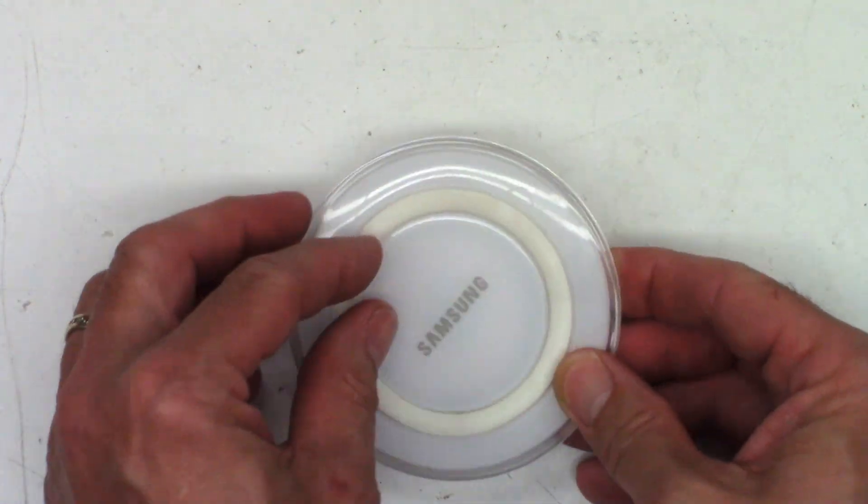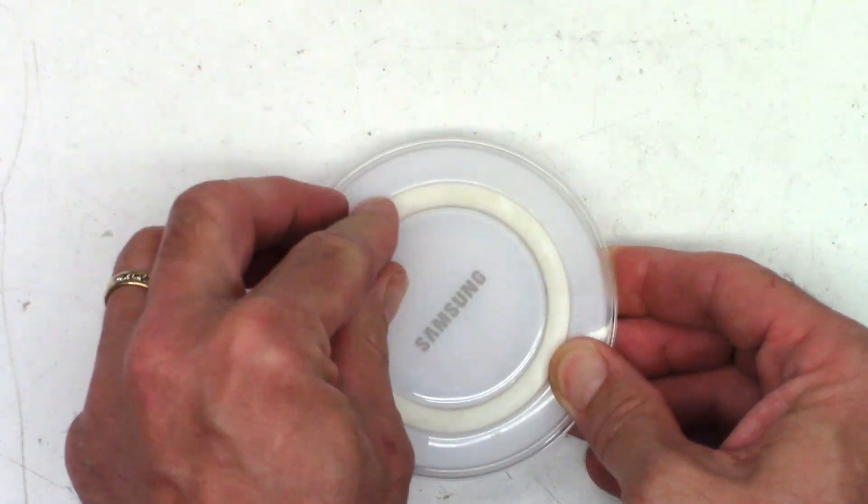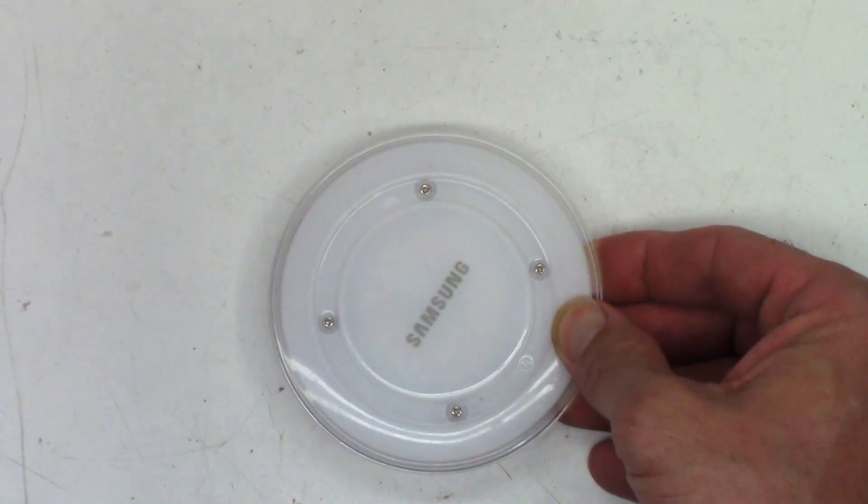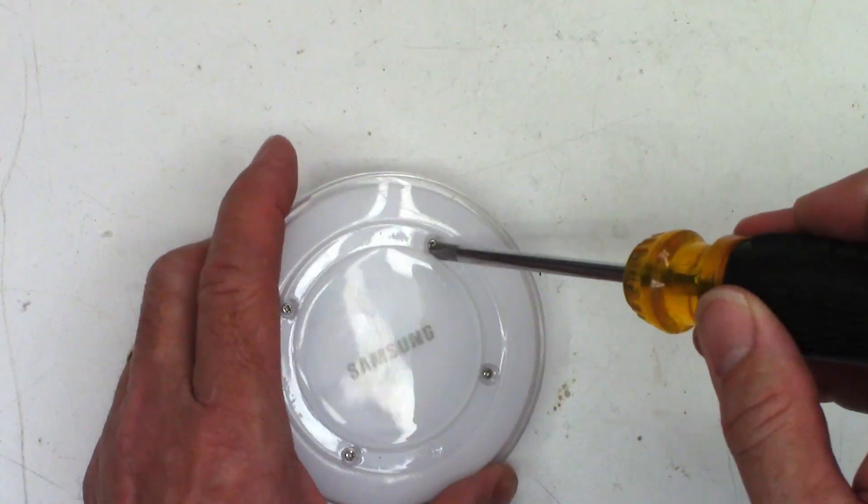So to get this thing apart, this is an adhesive ring. Just go ahead and pull it off, set it aside, and then four screws.